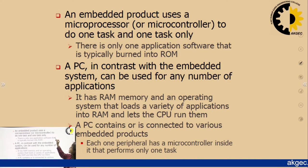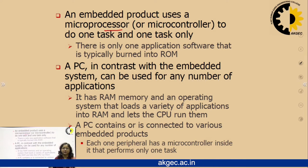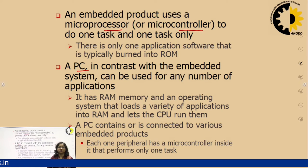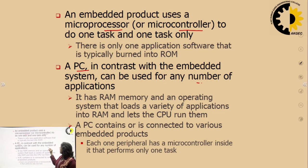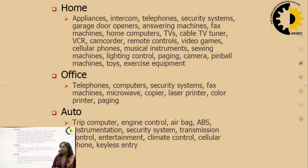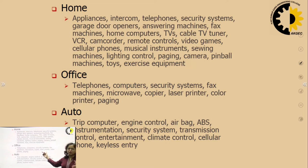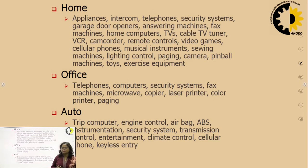An embedded product uses a microprocessor or microcontroller. A microprocessor-based system can perform multiple tasks, but a microcontroller system is designed for a single and specific task. A PC can be used for a range of applications, but its RAM, ROM, and I/Os are connected externally. Microcontroller-based systems, due to their limited cost, size, and less power consumption, are used in domestic and office applications like intercoms, telephone, computer, TV, remote control, and cellular phones. Think of any electronic device nowadays — it consists of one or another form of microcontroller.